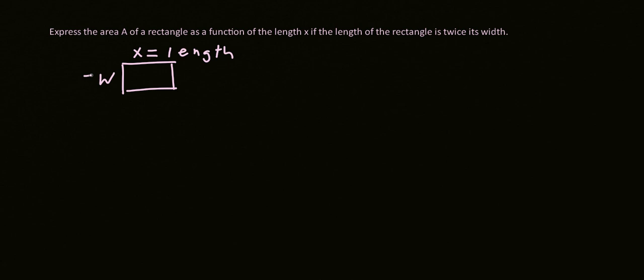So what do we know about the area of the triangle, I mean rectangle? Well, we know that it's x times w or length times width. So we want to express this thing as a function, but here's the tricky part. The tricky part is that the length is twice the size of its width. So how do we express that?